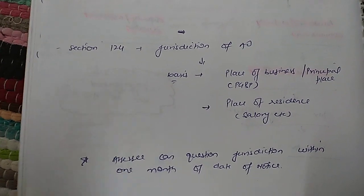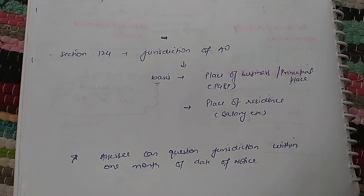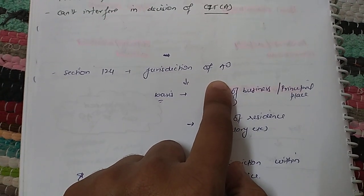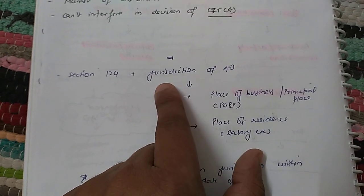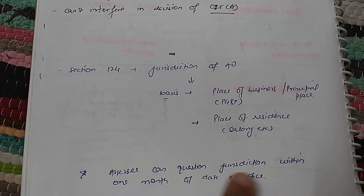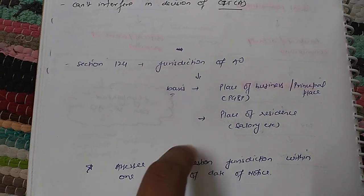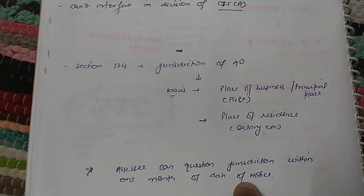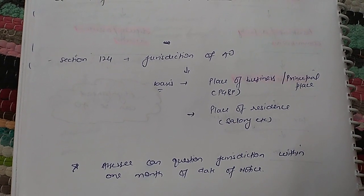One more point to note under this section: if the assessee receives any notice or order from the AO and wants to challenge the AO's jurisdiction, the assessee can question the jurisdiction of the AO within one month from the date of receiving the notice. So whenever the assessee receives a notice from the AO and wishes to challenge the jurisdiction, they must raise the question within one month from the date of that notice.